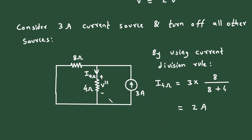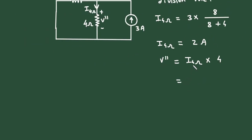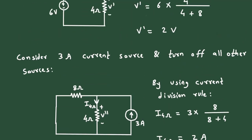To find V double prime, we use voltage equals current times resistance. So V double prime equals I₄Ω multiplied by 4 ohms, which is 2 amperes times 4, giving V double prime equals 8 volts.